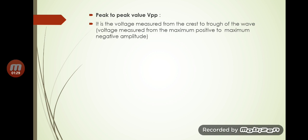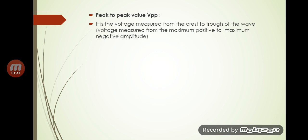Peak-to-peak value is the voltage measured from the crest to the trough of the wave, or it is the voltage measured from the maximum positive to the maximum negative amplitude. In the figure you can see that the maximum positive value is 10 and the maximum negative value is minus 10, so the peak-to-peak value is 20 volts.